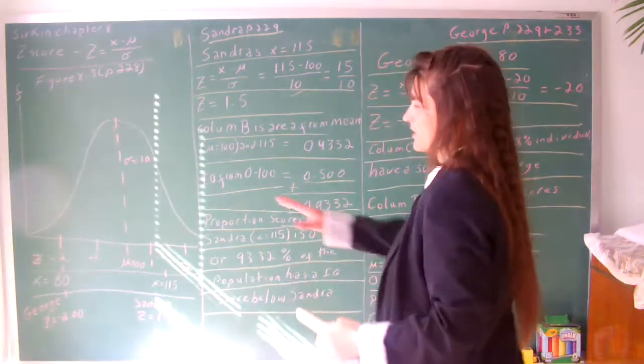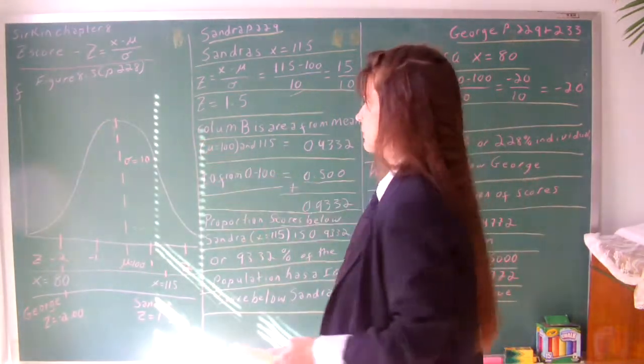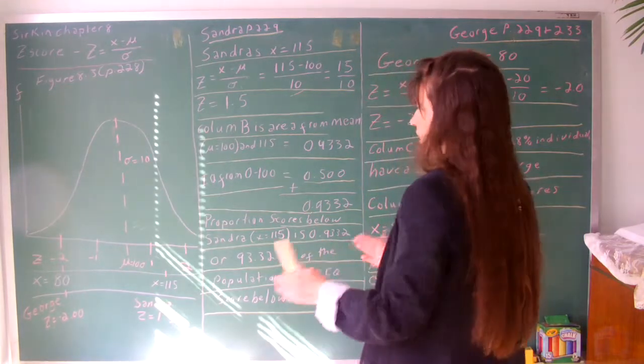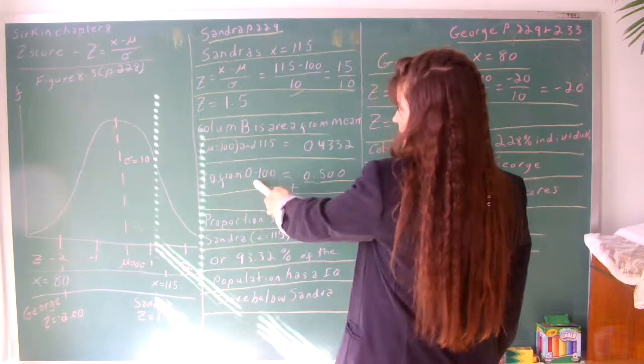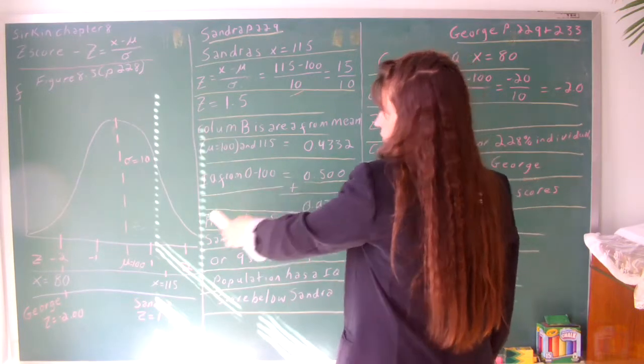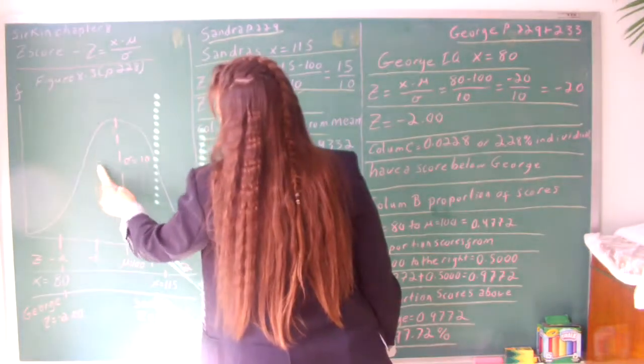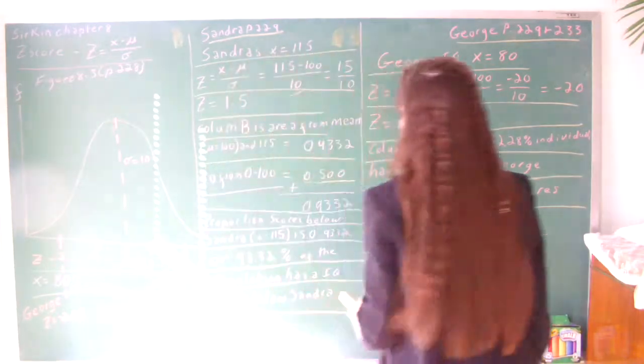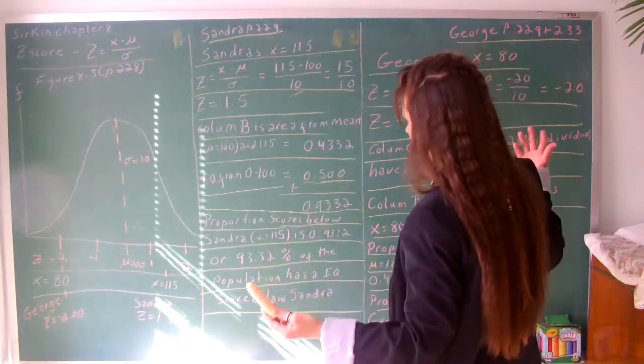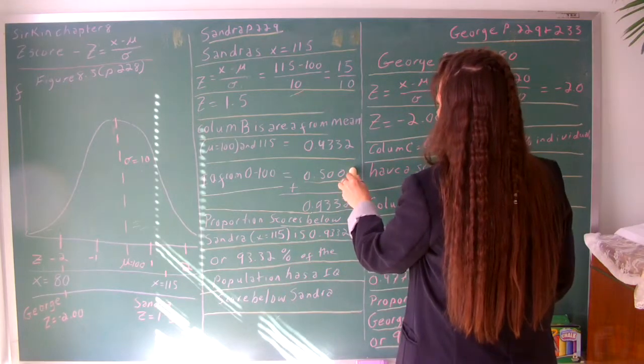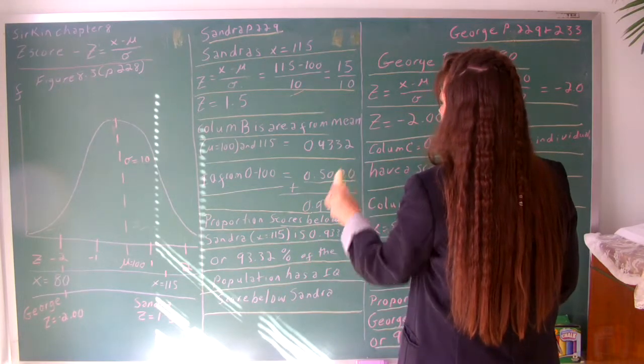We're pretending this is drawn correctly. This is supposed to be a bell curve, a normal curve. If you fold it in half, there's 50% of the scores on both sides. This end is from 0 to 100. That's 0 to 100, which proportion is 0.5000, or 50%. That's why we check our work.